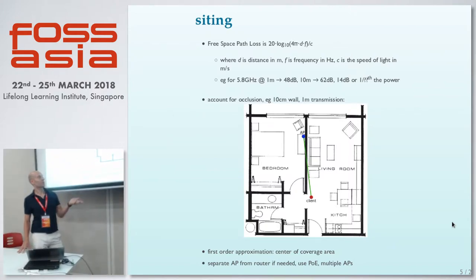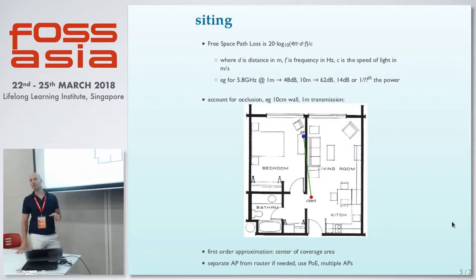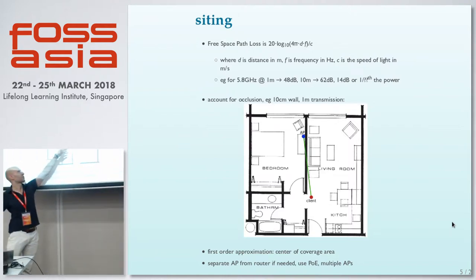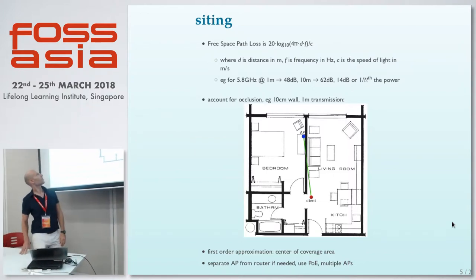Of course there wouldn't necessarily be a table or fiber point for you to plug in there, but that's where power over ethernet helps — and if you separate your radios and access points from your router, you can mount it on the ceiling, for example.